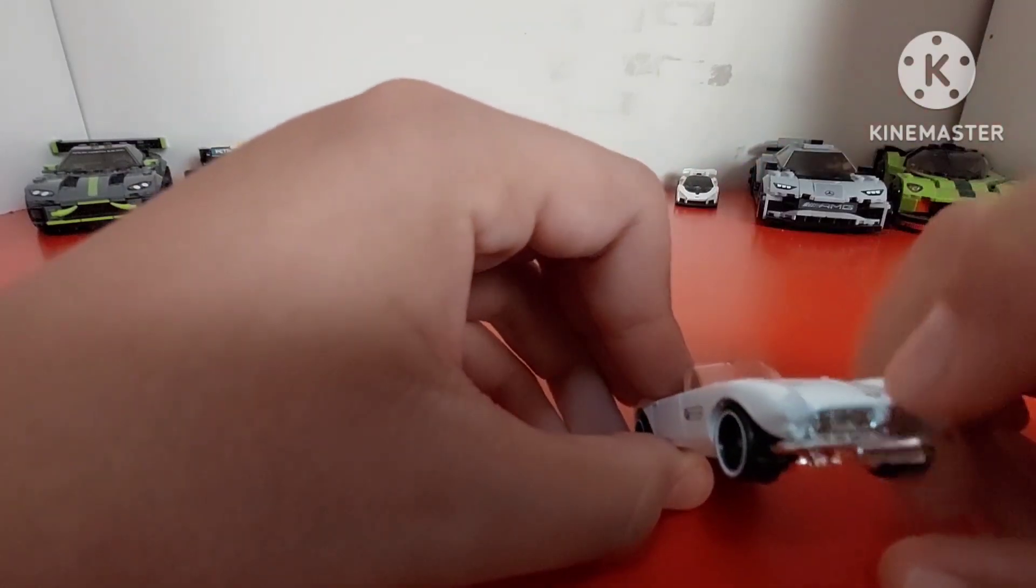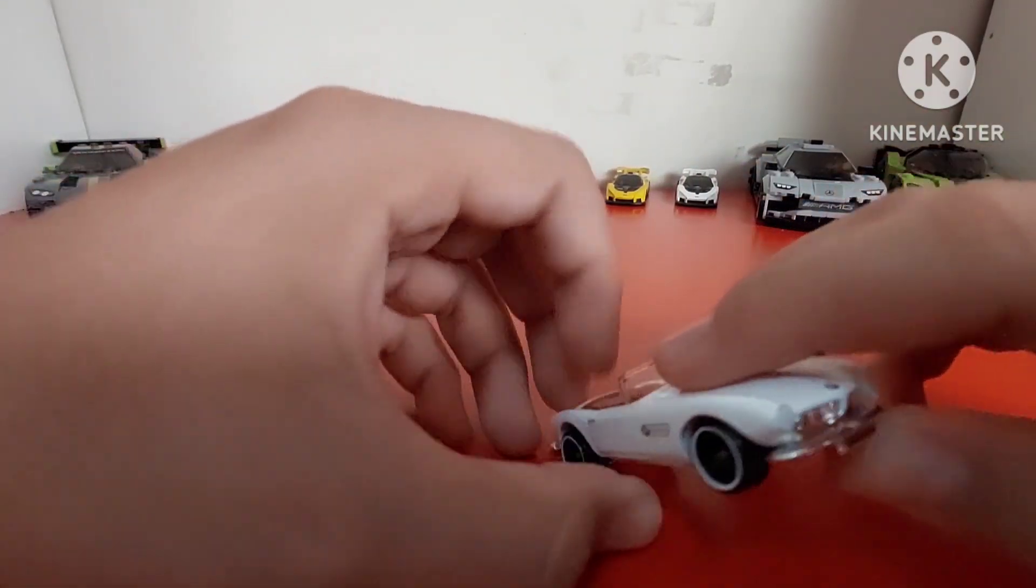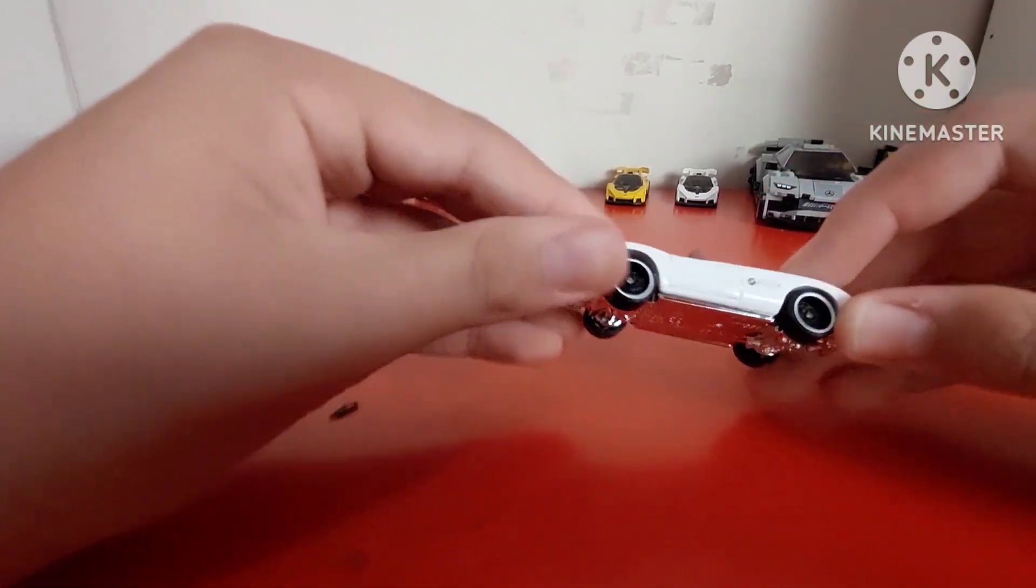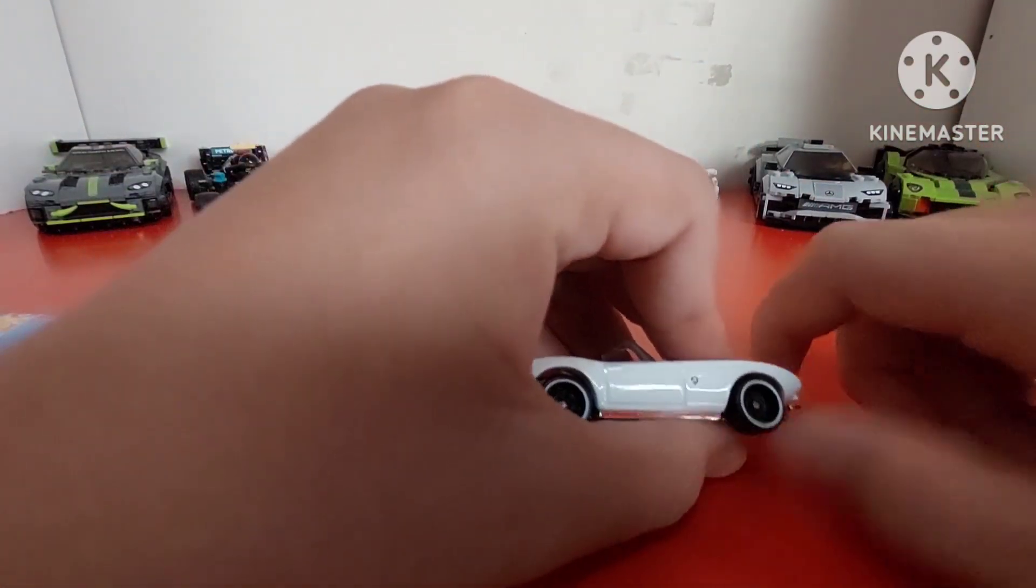Now this thing does not have any details on the front except the BMW logo, which is kind of disappointing, but nonetheless I like it. I mean, I like the white wall tires - yes, that's what they're called - and then you've got the red interior.